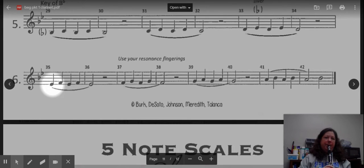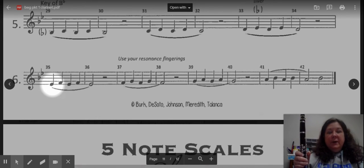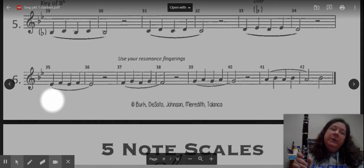Measure 37, we're going from F to G. And check out what this says. We're going to use our resonance fingerings for this. So that means that when we get to measure 37, our right hand is going to go down. So that is in place when we play that G. And we're just going to leave it down then for the rest of the line.